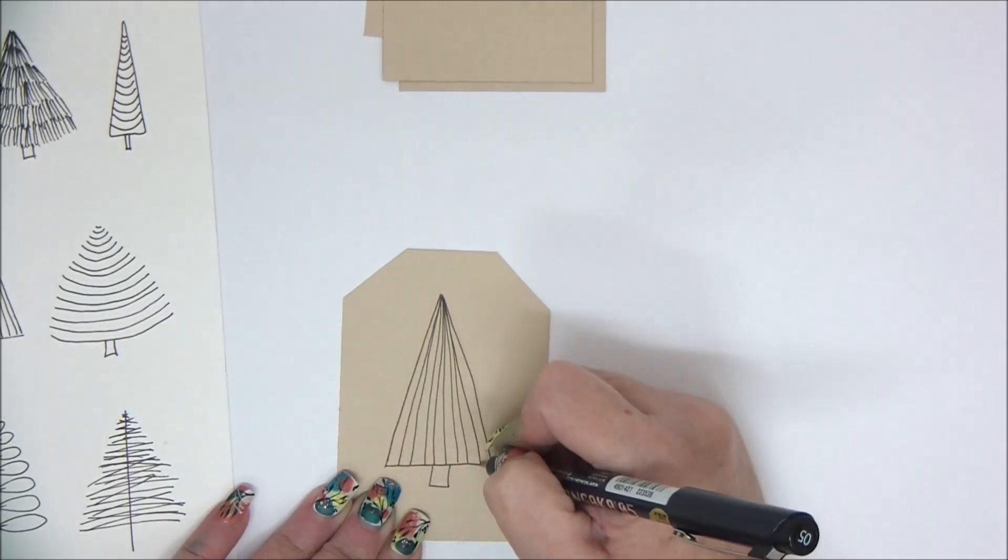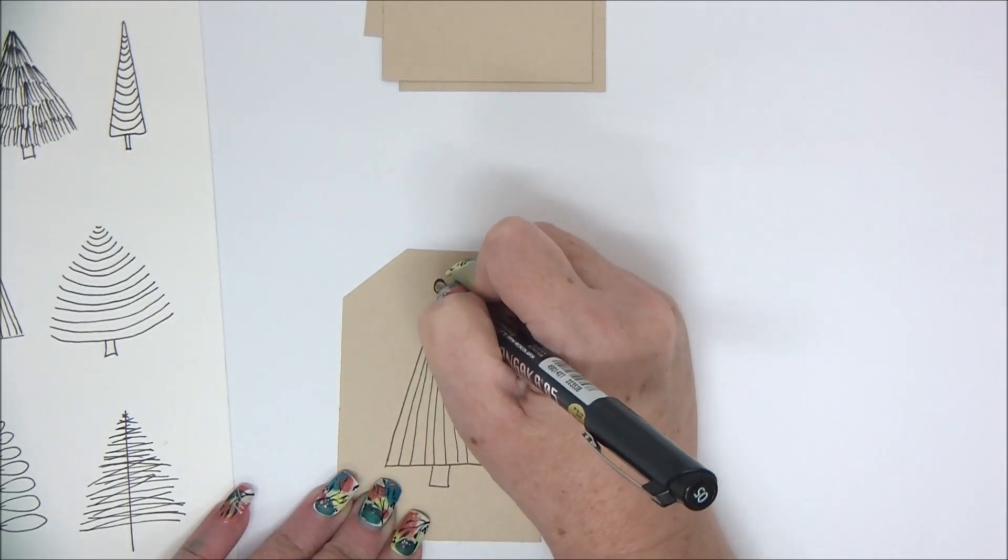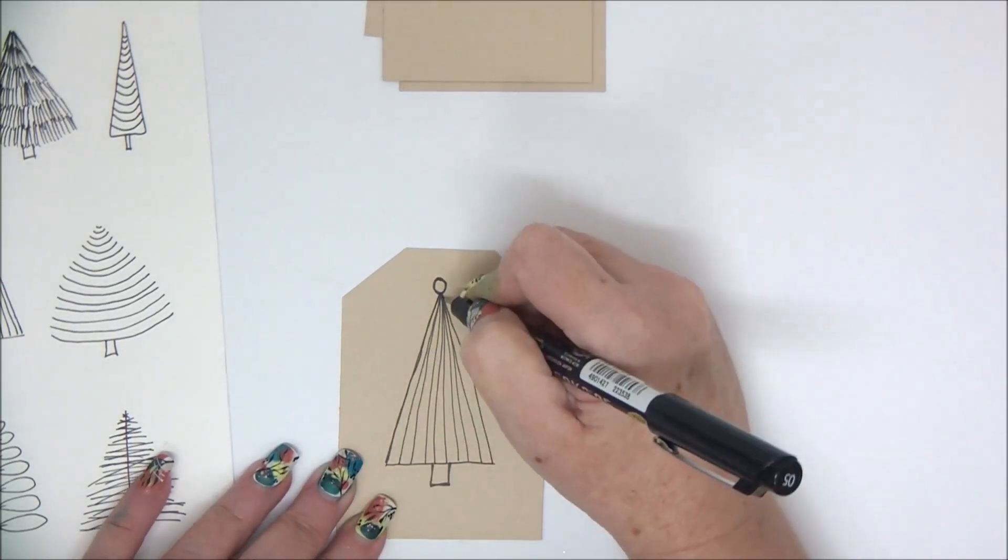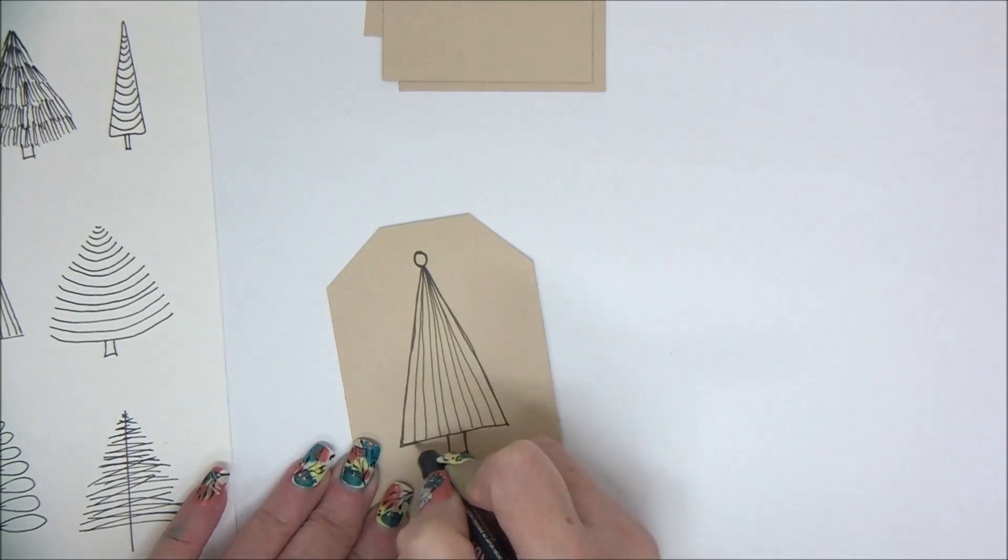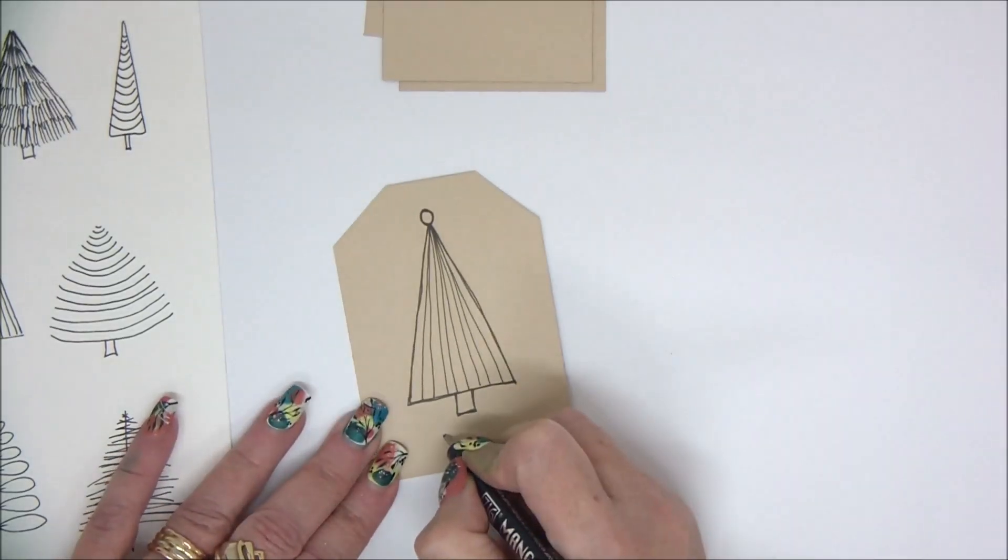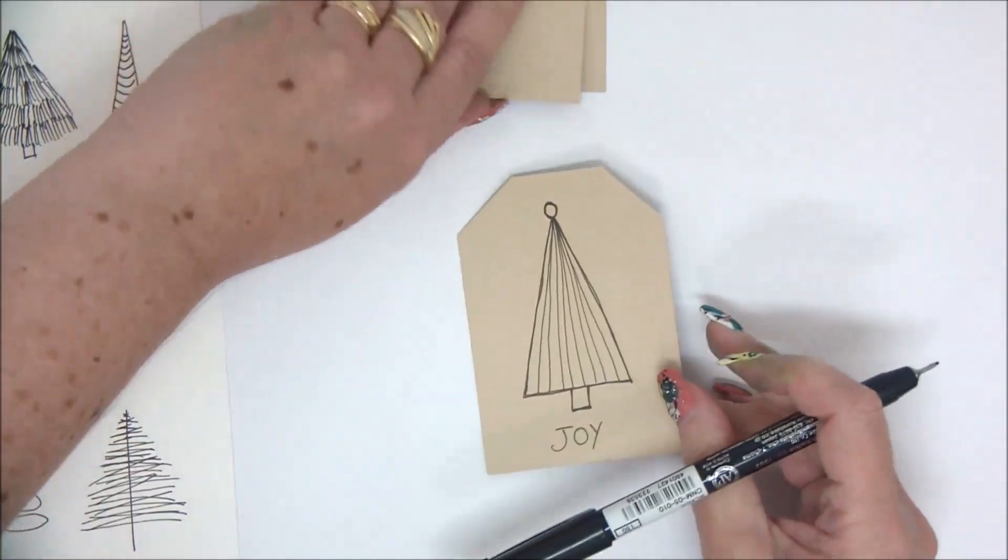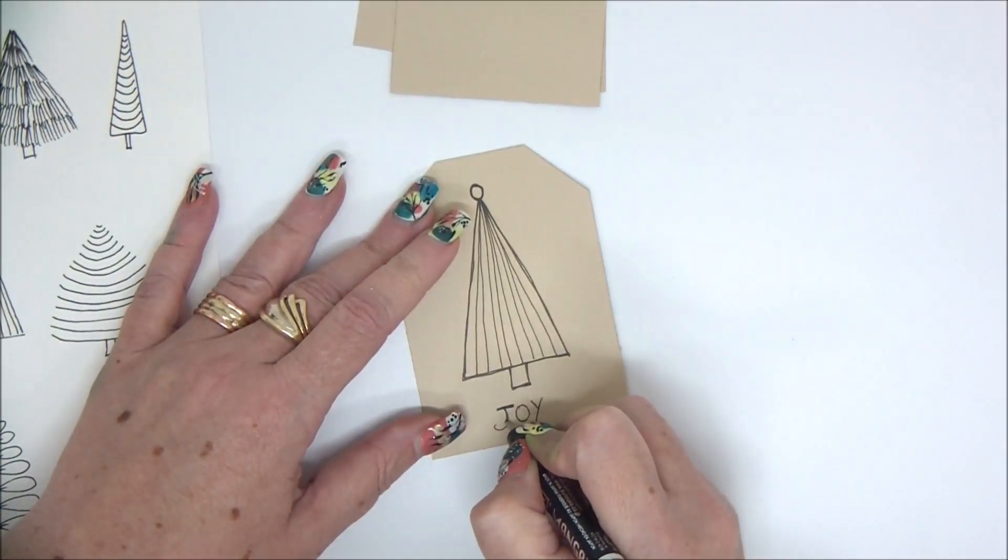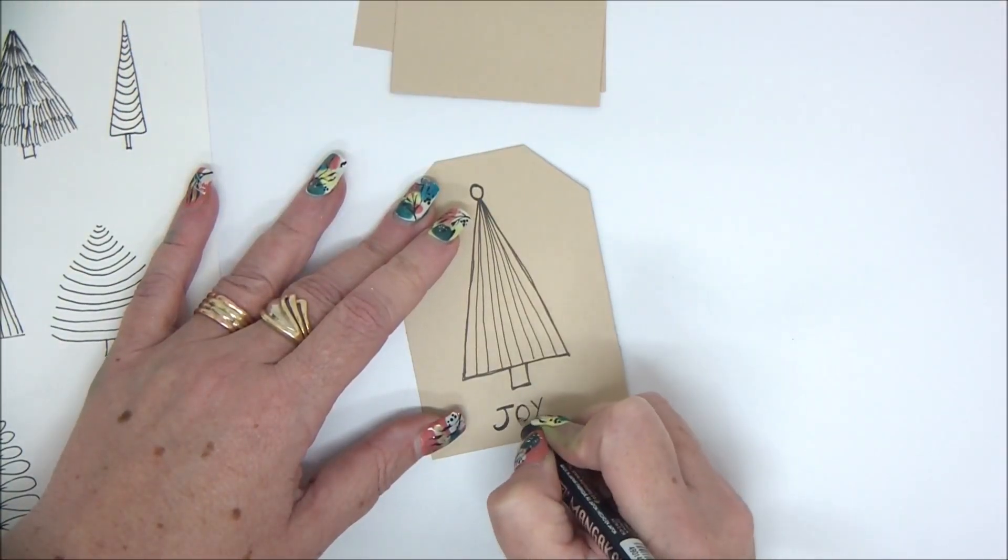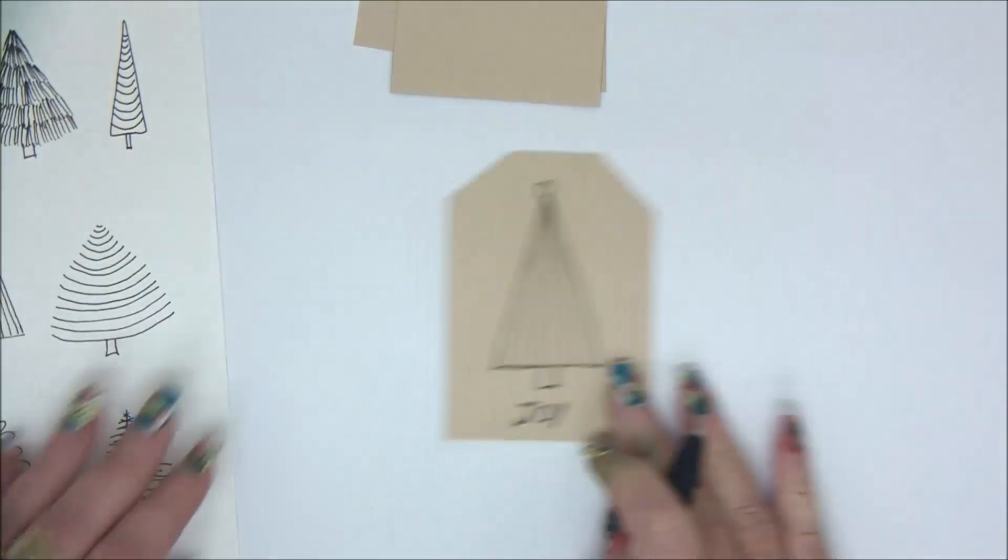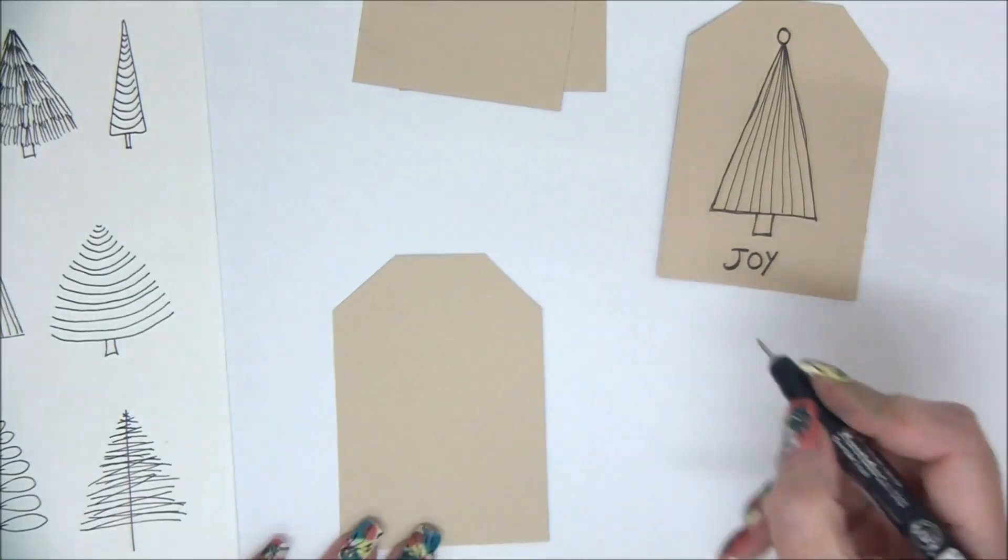And if you don't feel confident enough to draw directly on the tag with the black pen, you can do it with a pencil first and then go over with a pen. So just a very simple shape, then add the word Joy on the bottom. You can add a frame around it, add a little star on the top or circle, add whatever details that you want, and you have a really cool tag.